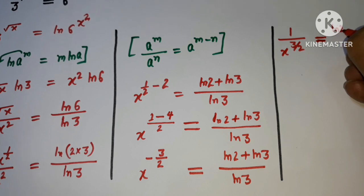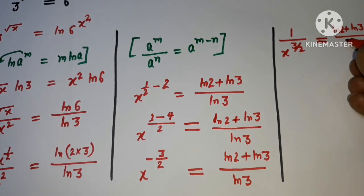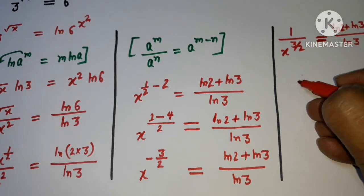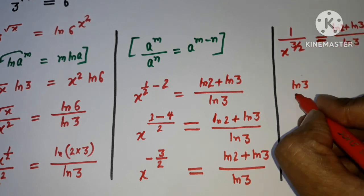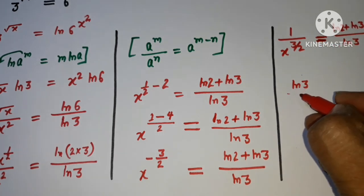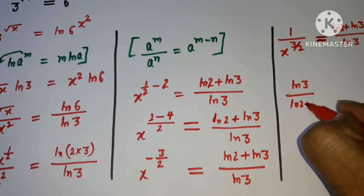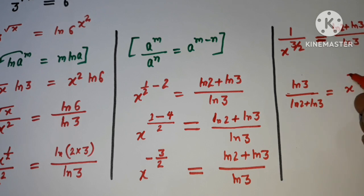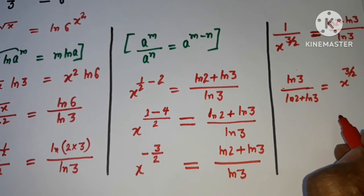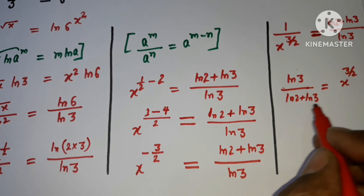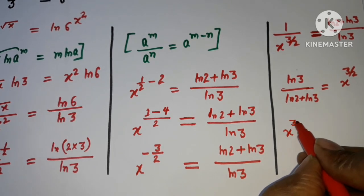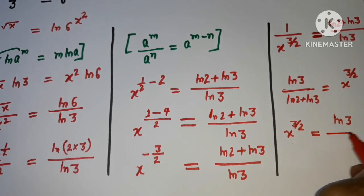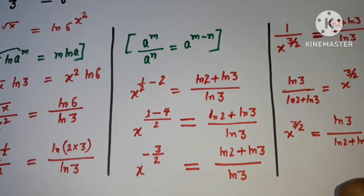The right-hand side remains (ln 2 plus ln 3) divided by ln 3. Now I'm going to cross-multiply, giving ln 3 divided by (ln 2 plus ln 3) equals x to the power 3/2. We put all variables on the left, rewriting: x to the power 3/2 equals ln 3 divided by (ln 2 plus ln 3).